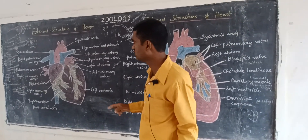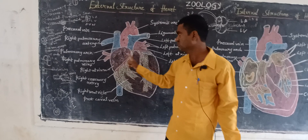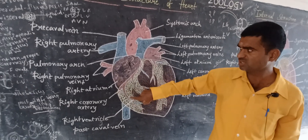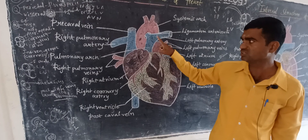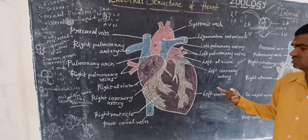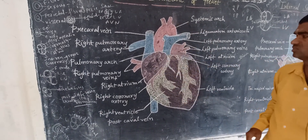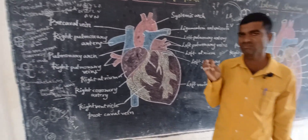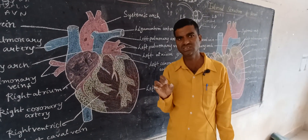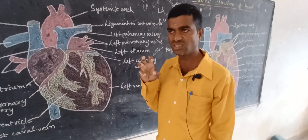The pulmonary arch is forming from the back side of the right atrium. The systemic arch is also forming, originating from the right side. Generally, arteries carry oxygenated blood and veins carry deoxygenated blood. However, pulmonary arteries carry deoxygenated blood, and pulmonary veins carry oxygenated blood — these points are important to remember.